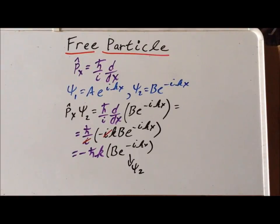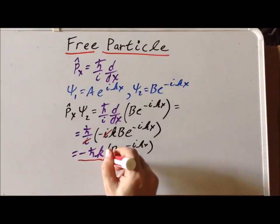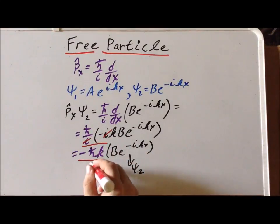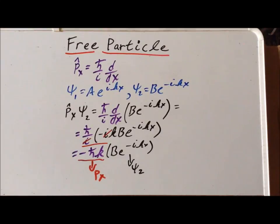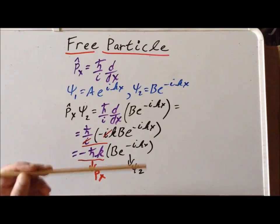So that tells us that the coefficient in front here, the minus h-bar k, is the momentum for this system. That's the momentum in the x direction. And we notice something peculiar here: when we had psi 1, the momentum was h-bar k. So assuming that k is a positive number, that tells us we have a positive momentum.